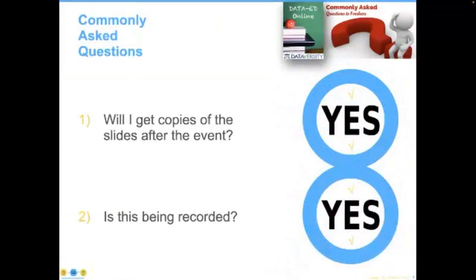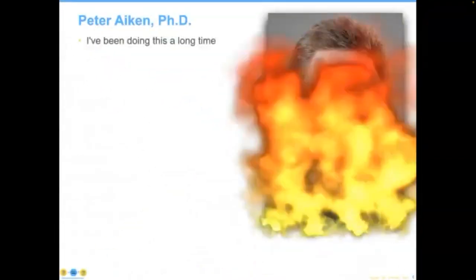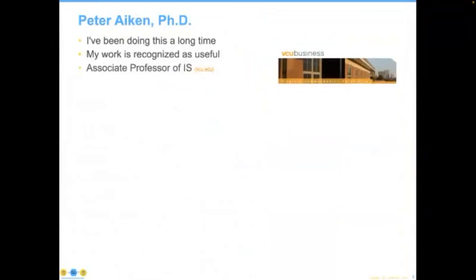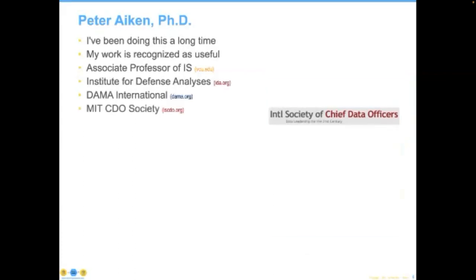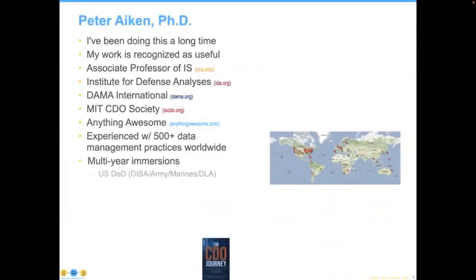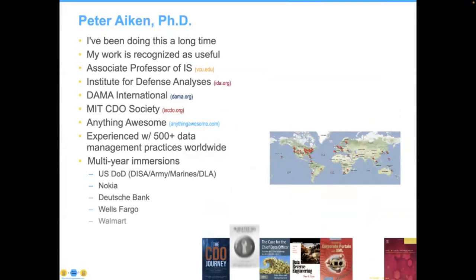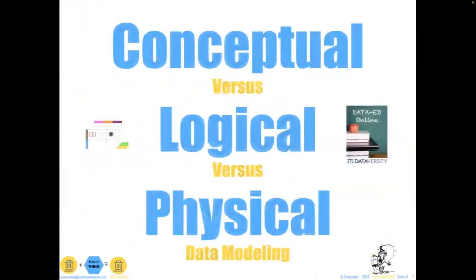Now let me introduce our speaker for today, Dr. Peter Akin. Peter is an acknowledged data management authority and associate professor at Virginia Commonwealth University, president of DEMA International, and associate director of the MIT International Society of Chief Data Officers. For more than 35 years, Peter has learned from working with hundreds of data management practices in 30 countries. Among his 12 books are many firsts. Peter has founded several organizations that help more than 200 organizations leverage data-specific savings measured at more than 1.5 billion US dollars. His latest project is Anything Awesome. And with that, let me turn everything over to Peter to get today's webinar started.